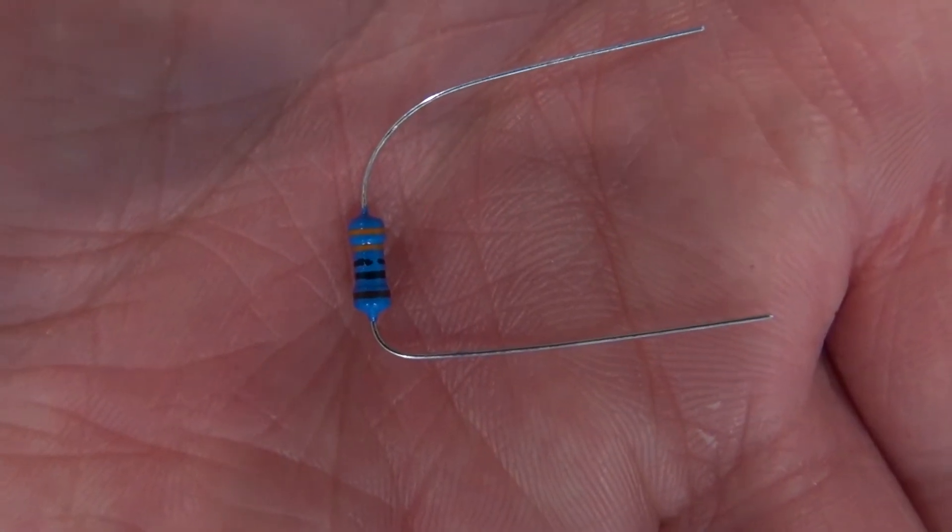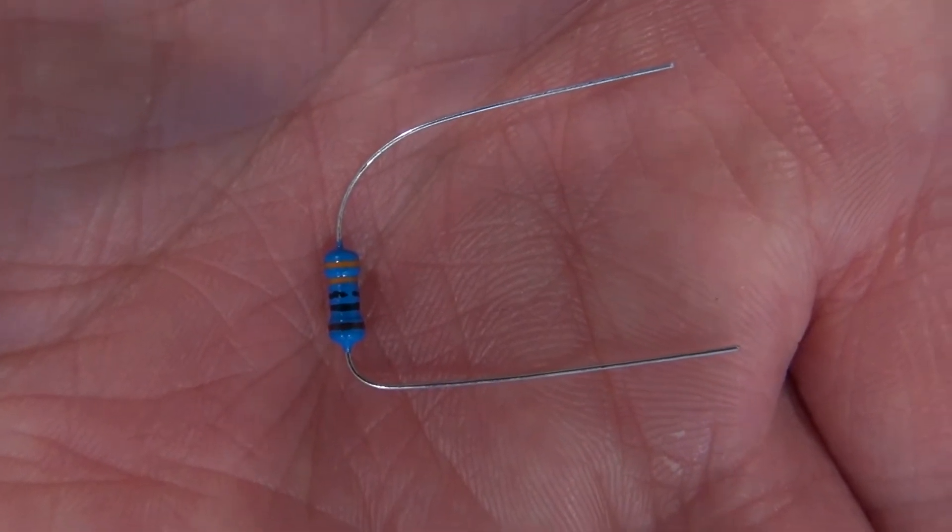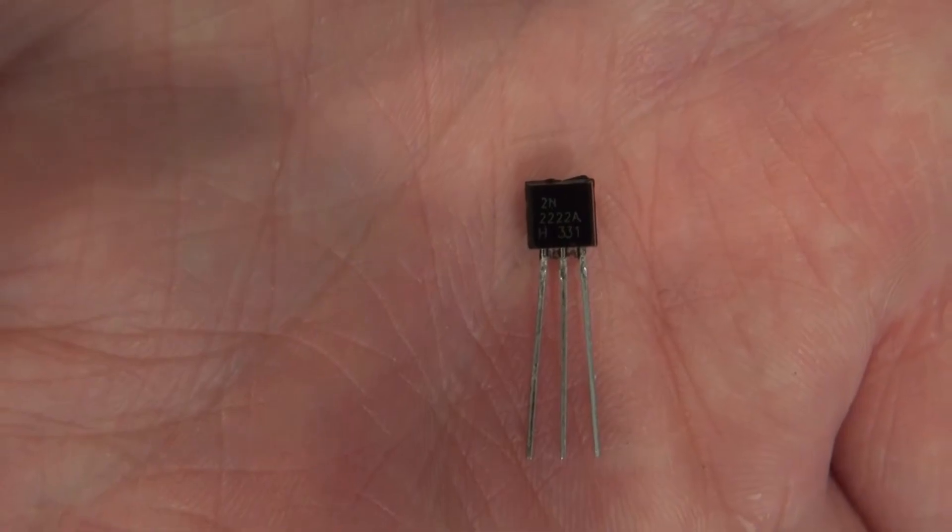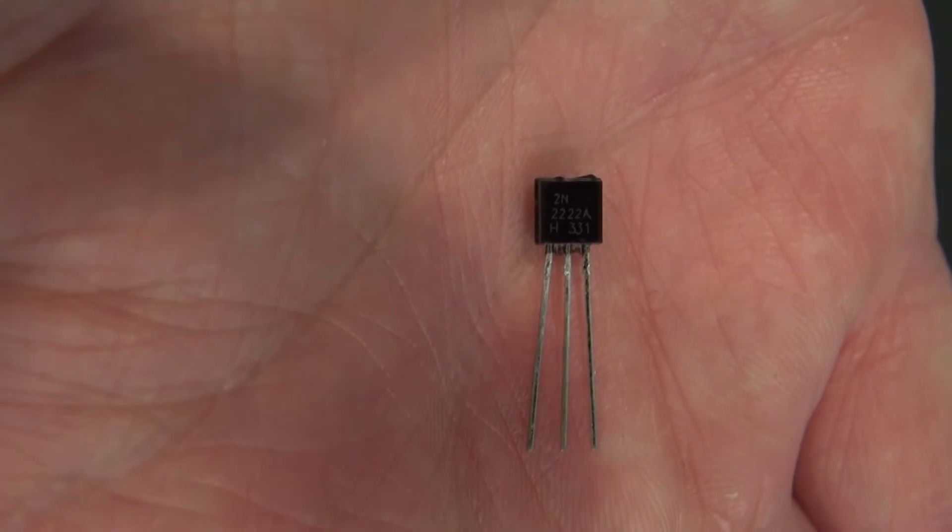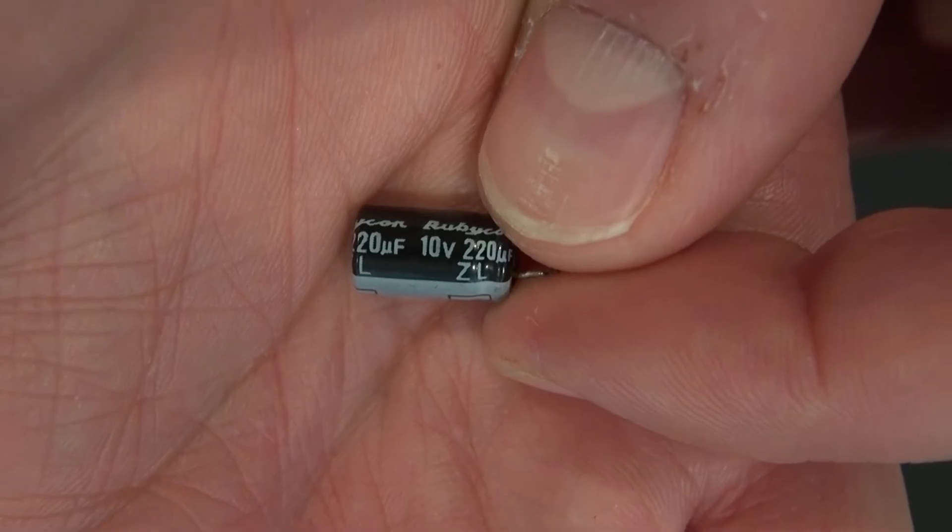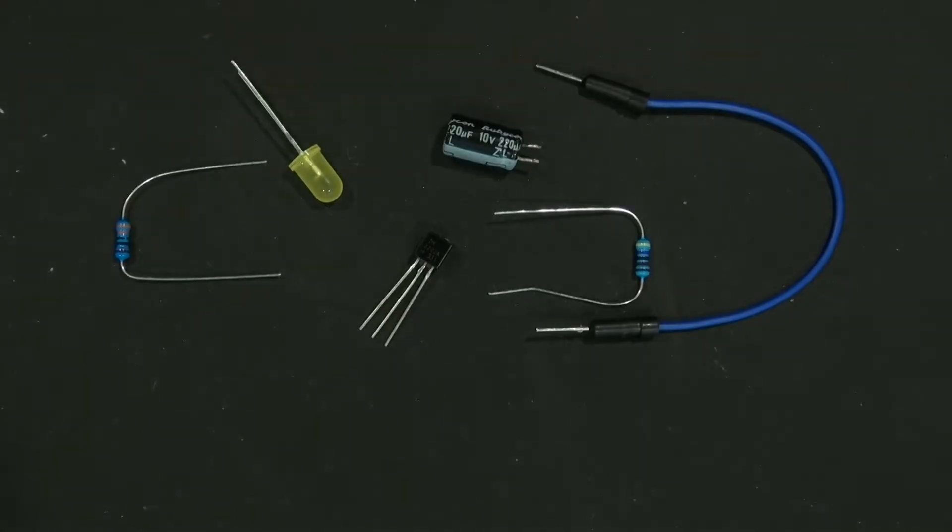I have right here a 330 ohm resistor, a 4.7k ohm resistor, a 2N2222 transistor, a 10 volt 220 microfarad capacitor, an LED, and a jumper cable.